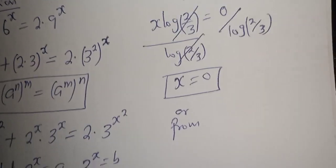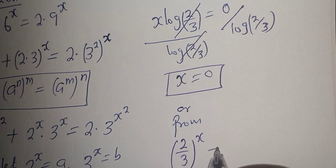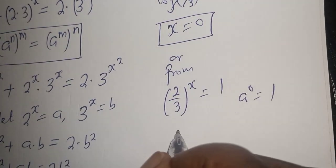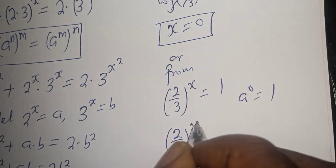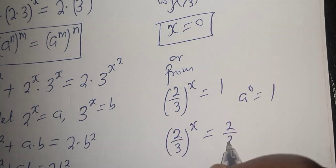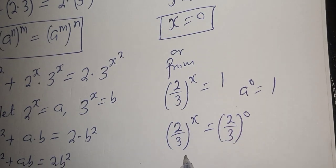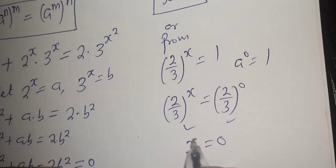Alternatively, from 2 over 3 to the power s equals 1, we know that any base raised to the power 0 equals 1. So 2 over 3 to the power s equals 2 over 3 raised to power 0. Because of the same base, the exponent s is equal to 0. This is the final answer.